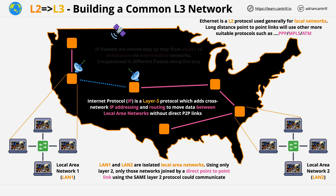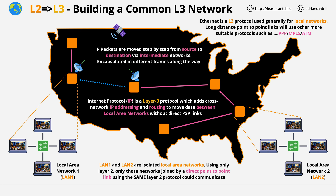IP packets are moved from source to destination across the internet through many intermediate networks. Devices called routers, which are layer 3 devices, move packets of data across different networks.